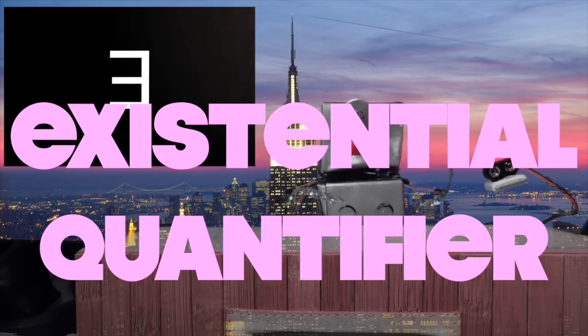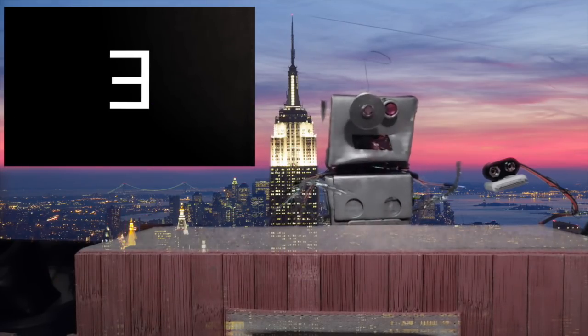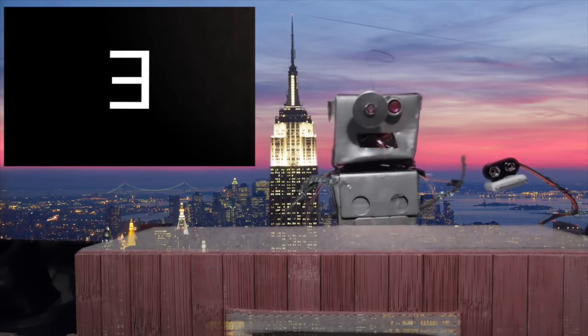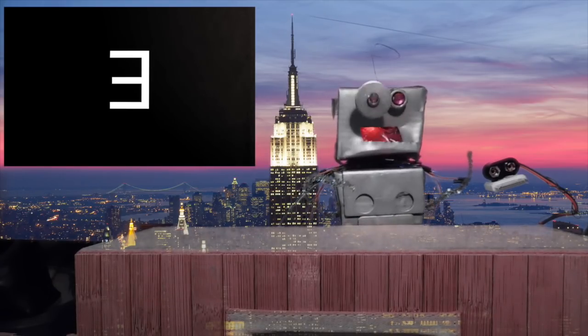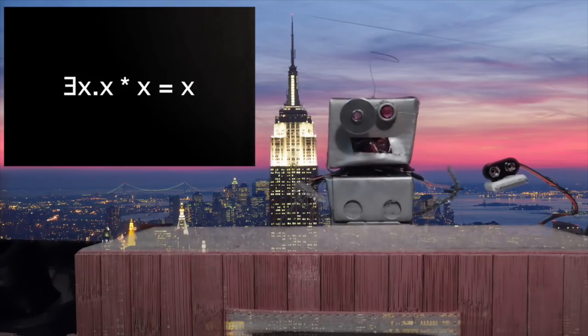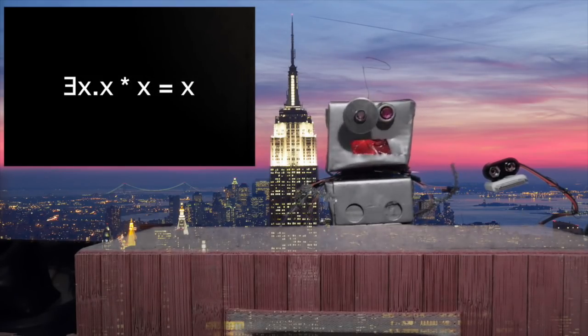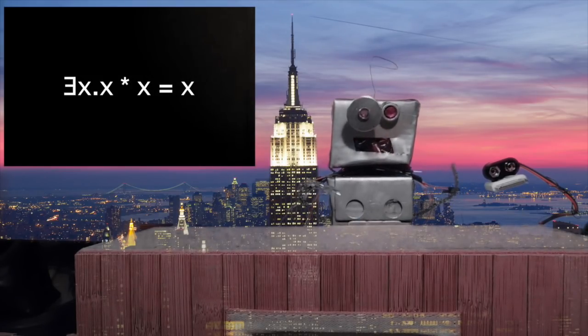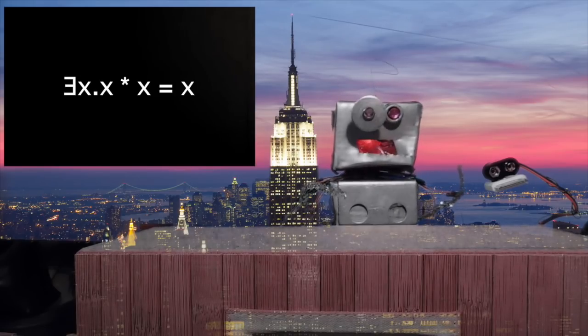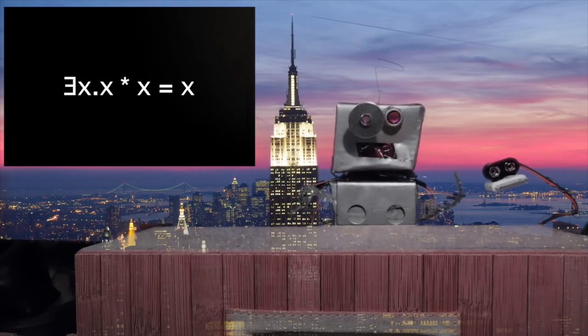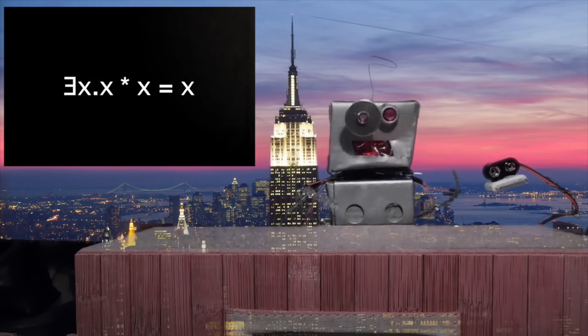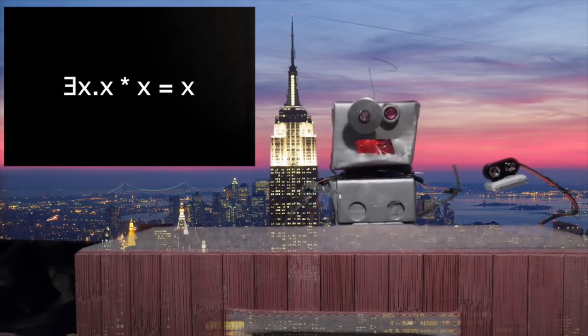So now we have the existential quantifier and this one's pretty neat. This one means there's something out there. Something exists for which the statement holds true. So we have this some X out there for some X, X times X equals X. And that's, you know, the number one, right? It doesn't hold for every number. I can't just throw a number in there. It's not for all, but there exists some X where that holds.